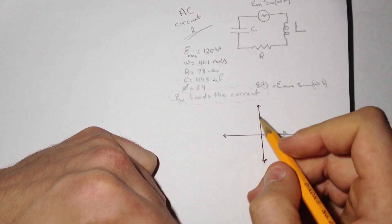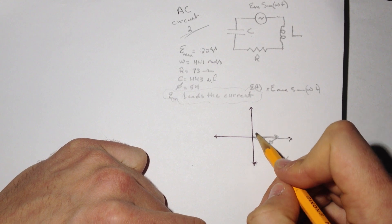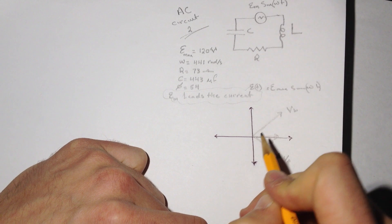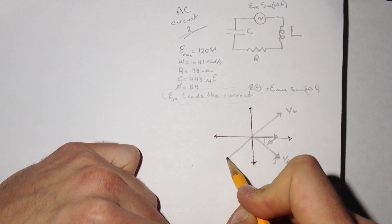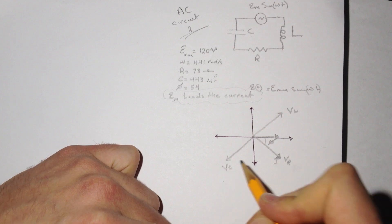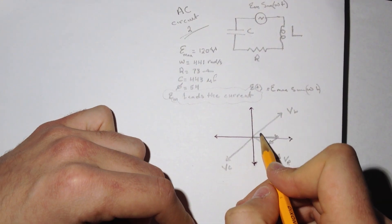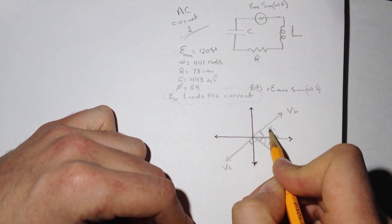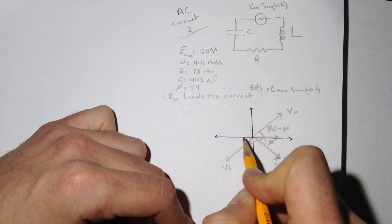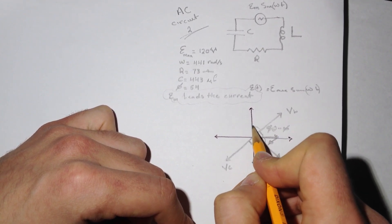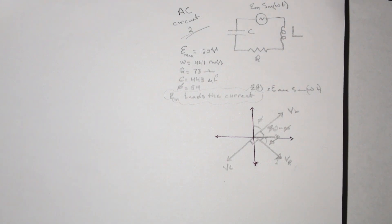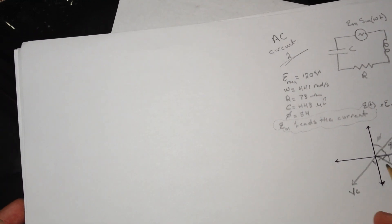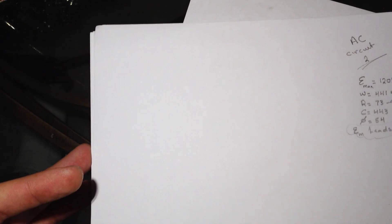The V_R vector represents the current direction. V_R is perpendicular to V_L, and V_L is perpendicular to V_C, each separated by 90 degrees. The angle from the reference axis is 90 minus phi, and from the other side it's also phi. We'll return to this diagram when doing the questions.